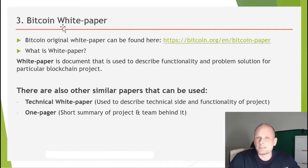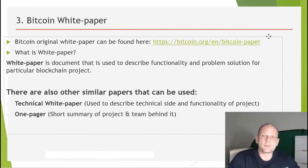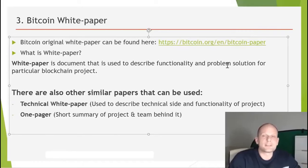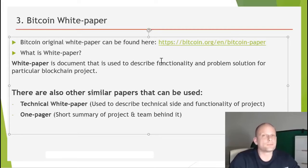The Bitcoin whitepaper is a document that describes the functionality and problem solution for a particular blockchain technology. In this case it describes how Bitcoin works. It was created by Satoshi Nakamoto — it doesn't describe everything in great technical detail, but points out what problems are being solved. I will describe these further in this video series as well.